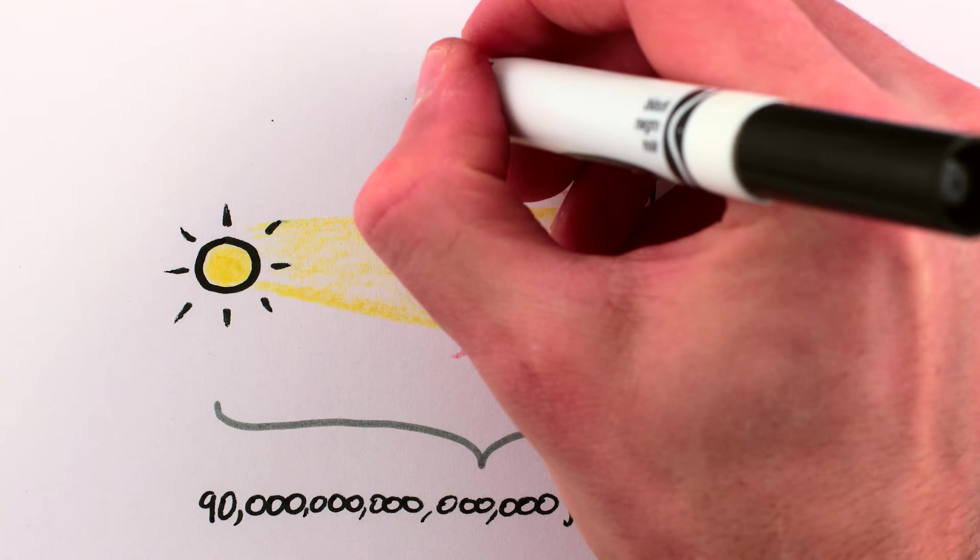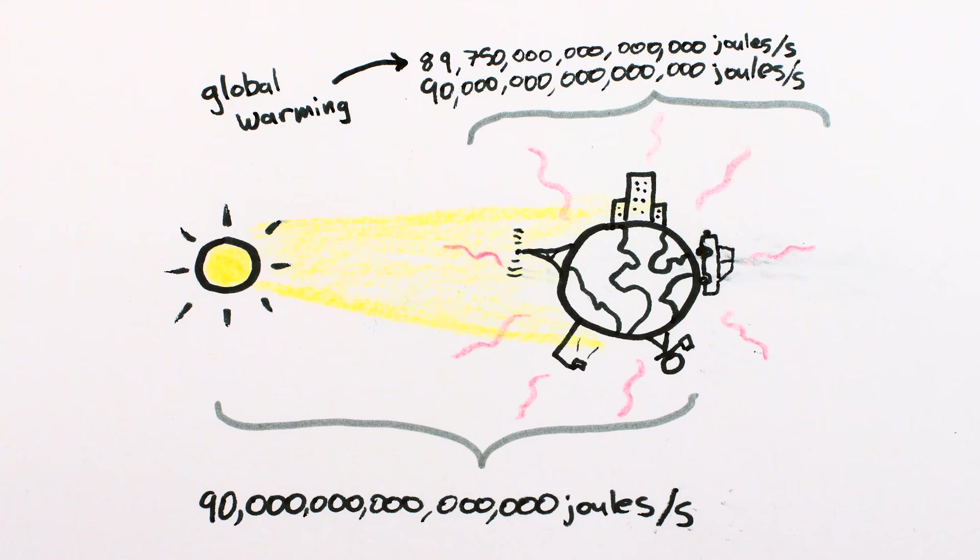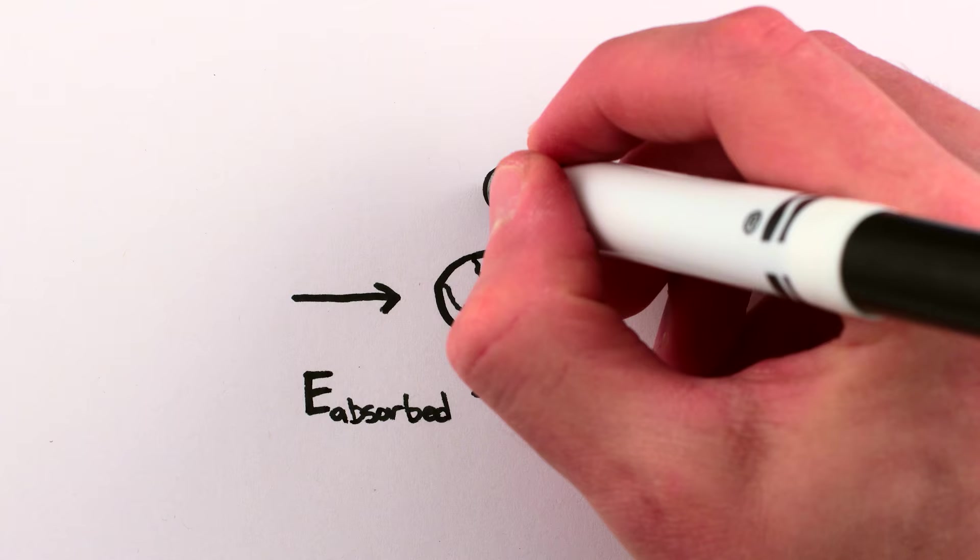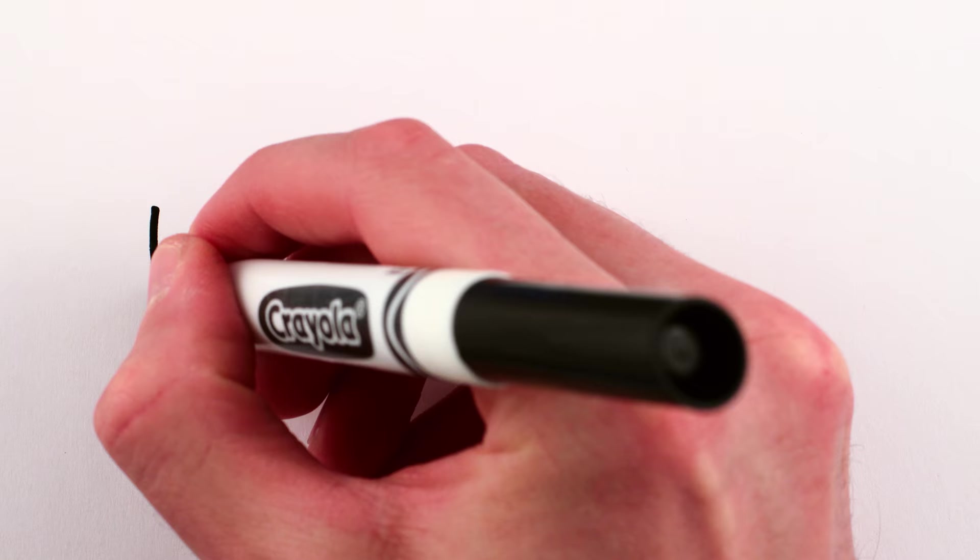However, the Earth also radiates an equal amount of energy back into space as heat. An almost equal amount, anyway. The Earth is gradually heating up, but that's another story. So if energy in equals energy out, how can we possibly be using any energy to do anything?